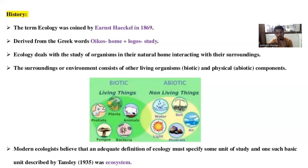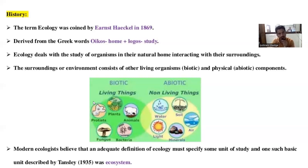These biotic and abiotic components are present in our physical environment. Now we study about the ecosystem. Ecosystem means the study of biotic components as well as abiotic components and their interrelationship. Biotic and abiotic components are present in the environment and they interact with each other — they are interrelated in a physical environment. This is called the ecosystem. The term ecosystem was coined by A.G. Tansley in 1935.